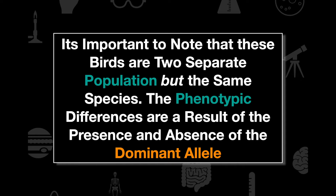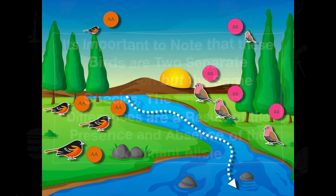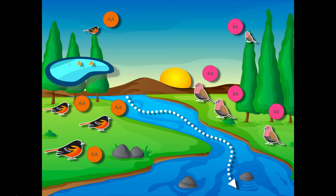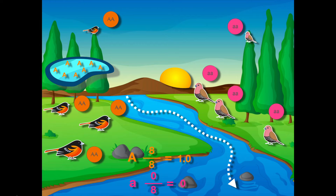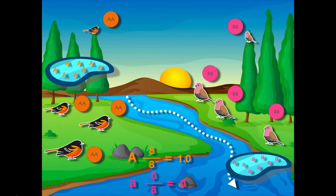These birds are two separate populations but the same species, so they can reproduce. The phenotypic differences — orange versus pink — result from the presence or absence of the dominant allele. Looking at the allele pool: the left population has eight out of eight dominant alleles (frequency = 1.0; recessive = 0). The right population has zero dominant alleles and eight out of eight recessive alleles (frequency = 1.0).